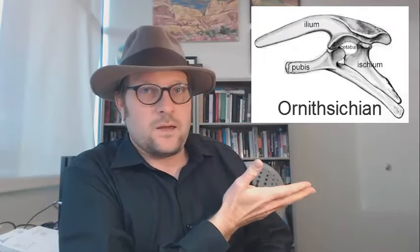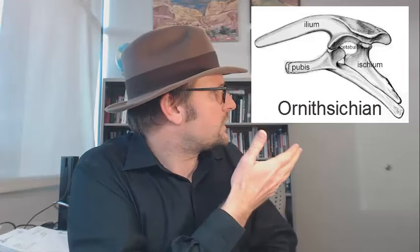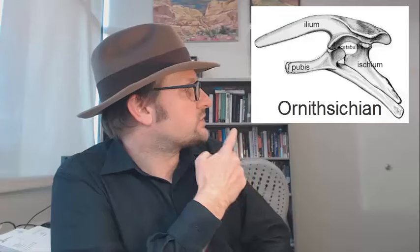Now this is an Ornithischian hip. You will note that the pubis bone projects backward to lay alongside the ischium. It is also reduced, but notice that the pubis also has a projection forward, but is higher up in the animal.